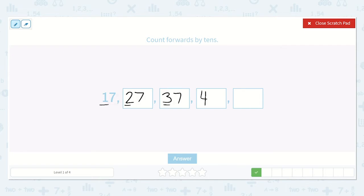So 47, 57. So counting forwards by tens, it goes 17, 27, 37, 47, 57.